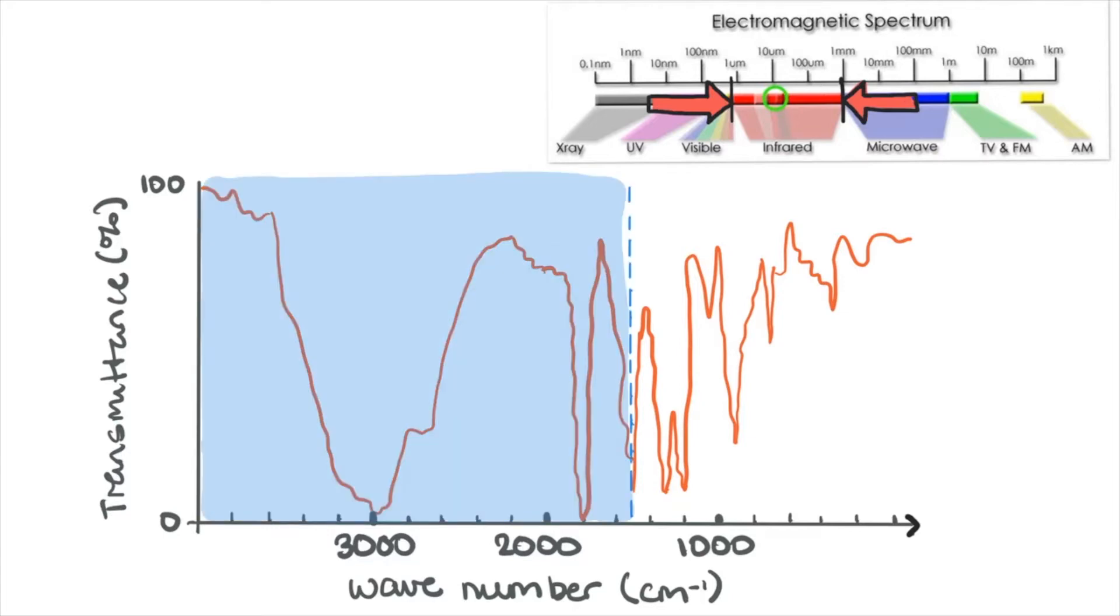This area on the spectrum that's above a wave number of 1500 is known as the diagnostic region and provides good information about the functional groups in the sample. To the right of this region is known as the fingerprint region and is unique to each organic compound. This can be used to confirm the identity of unknown compounds by comparing its spectra to known standards. But that's beyond the scope of this course, so we'll focus on the diagnostic part.